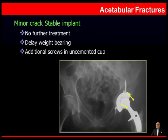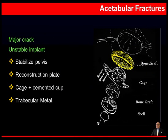In acetabular fractures, if there is a minor crack — a type 1 minor crack with an unstable implant — it does not require further treatment; you can delay weight bearing and additional screws may be used in an uncemented cup. However, if you have a major crack and the implant is also unstable, you need to stabilize the pelvis first, use a reconstruction plate, and then use a cage or cement plus a cemented cup. You may even use trabecular metal.